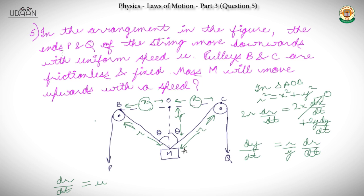We have seen that ends P and Q of the string move downwards with uniform speed U. And because this is a frictionless pulley, we can assume that the velocity will be equal to the same velocity with which P and Q are moving downwards.